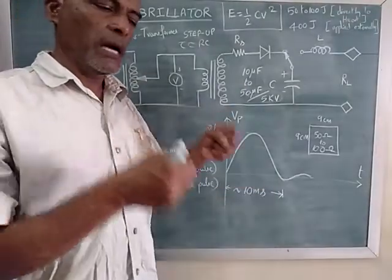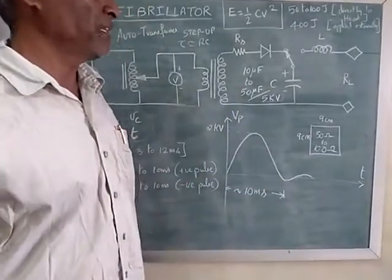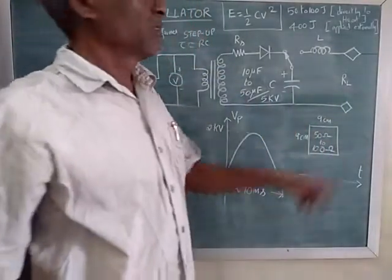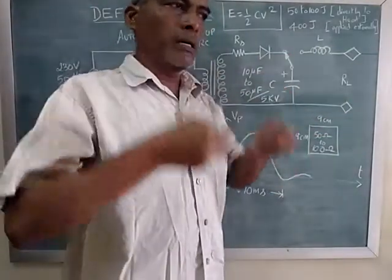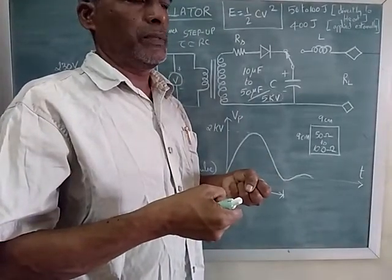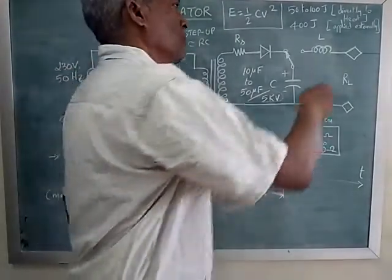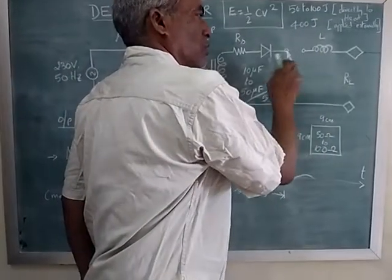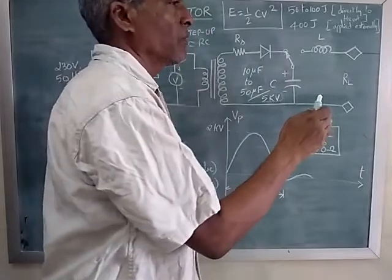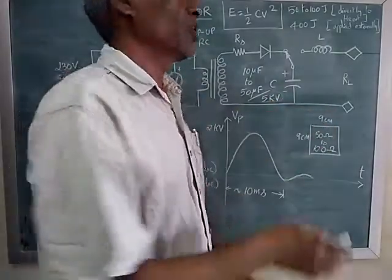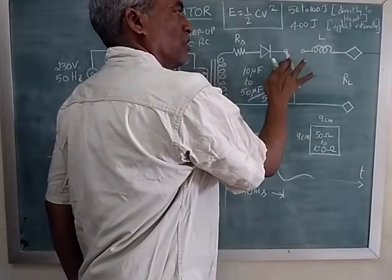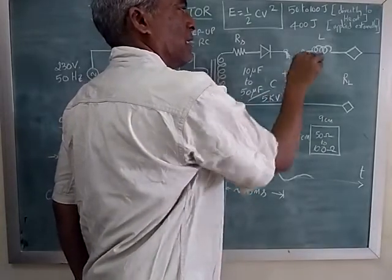So what happens is the capacitor charges. So when you want to apply to the patient, these two are electrodes. So these two electrodes are pressed on the chest of the patient. So the switch is initially connected here for normal charging. But when you apply for the shock for the patient, then you have to connect the switch here. That means this portion is disconnected and it gets connected here.